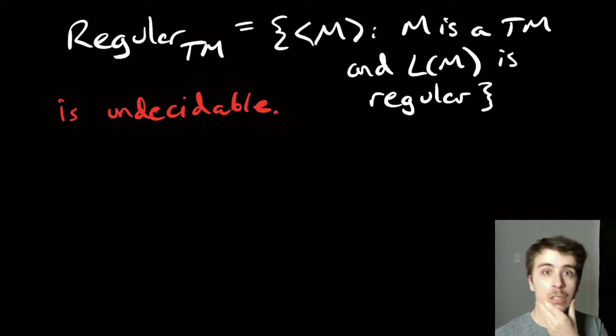What we're going to do is similar to how we proved ETM undecidable, in that we'll suppose that this thing is decidable and then try to solve ATM.